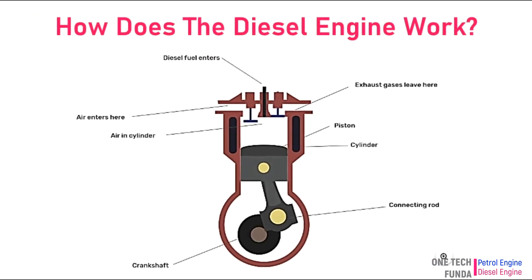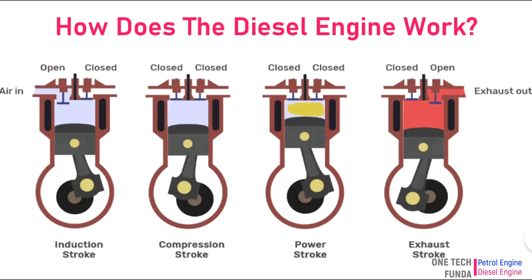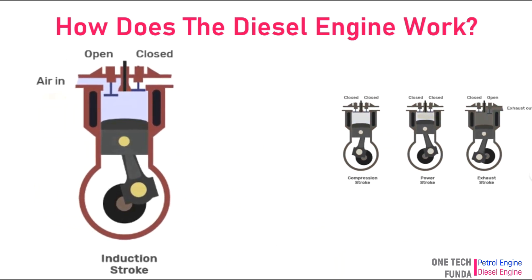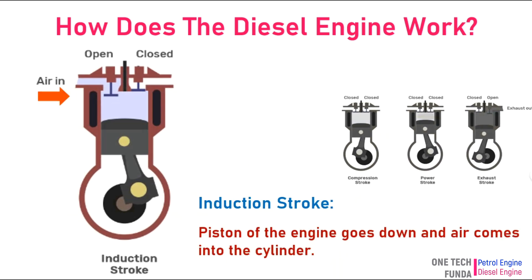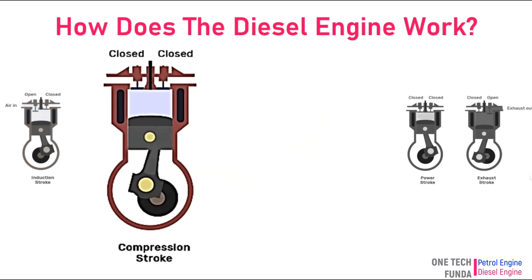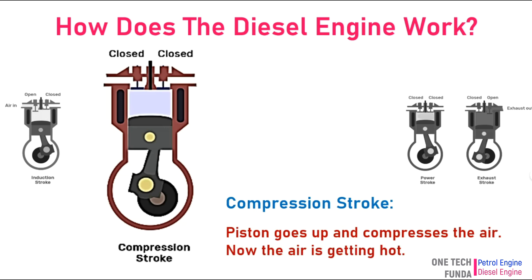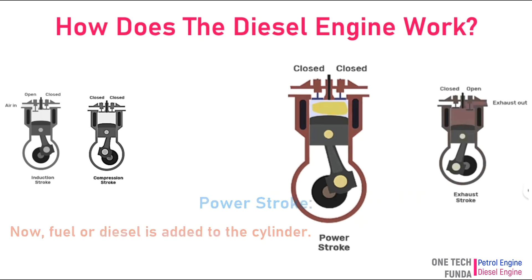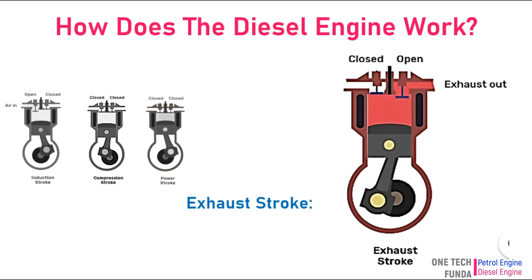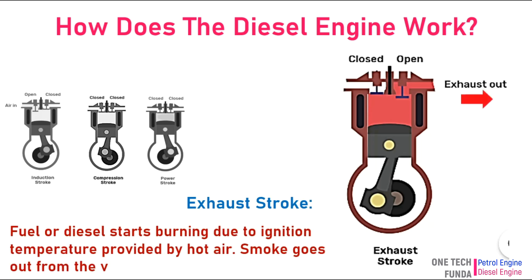How does the diesel engine work? Working of a diesel engine can be expressed by four steps. Intake stroke: the piston goes down and air comes into the cylinder. Compression stroke: the piston goes up and compresses the air, causing it to heat up. Power stroke: fuel or diesel is added to the cylinder. Exhaust stroke: the fuel ignites due to the high temperature of the compressed air, and smoke goes out from the valve.